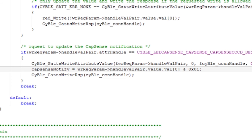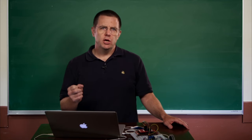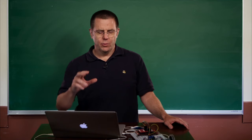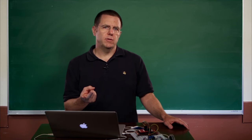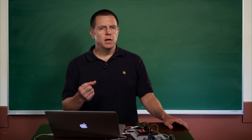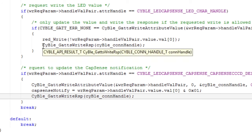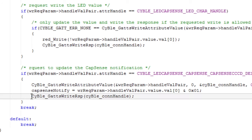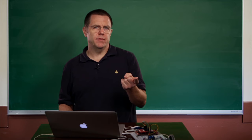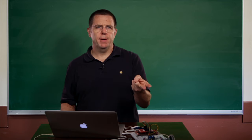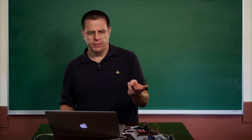The last thing you need to do — the BLE spec says that when you get written to, you need to give a response. So in either case, whether they write the LED or the CapSense CCCD, you need to send a response using the CYBLE interrupts function. So at this point, we've got the update LED function, the update CapSense function, and the BLE stack event handler function.